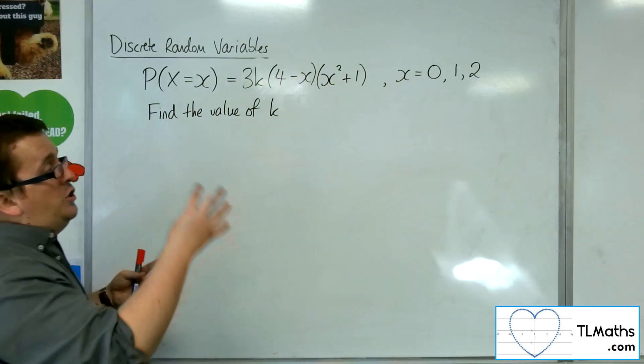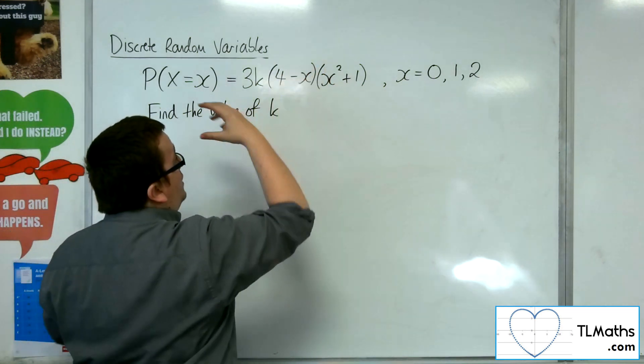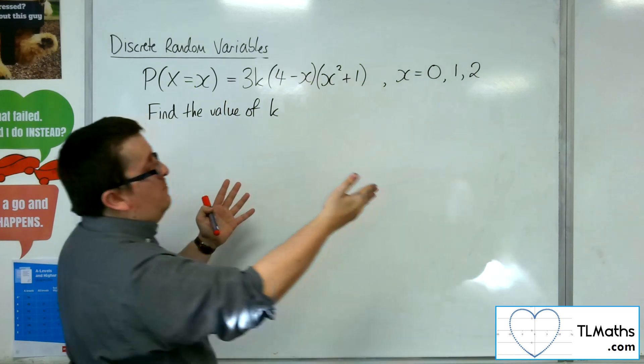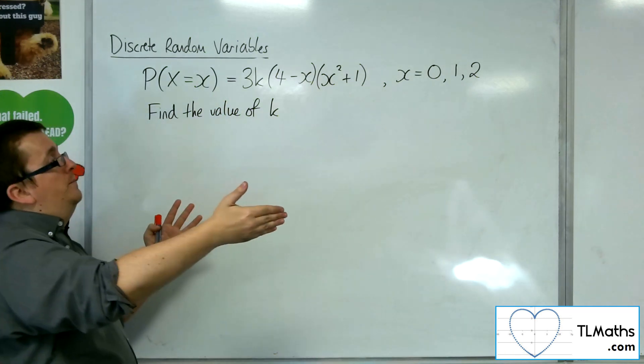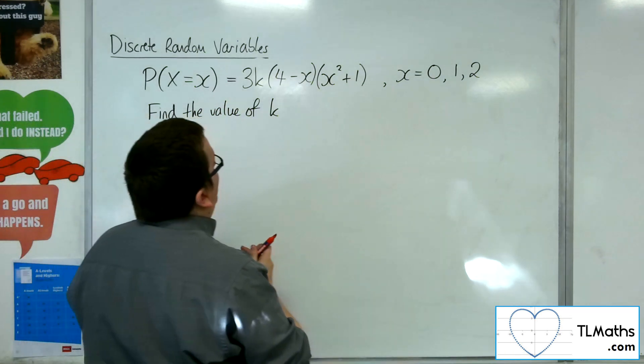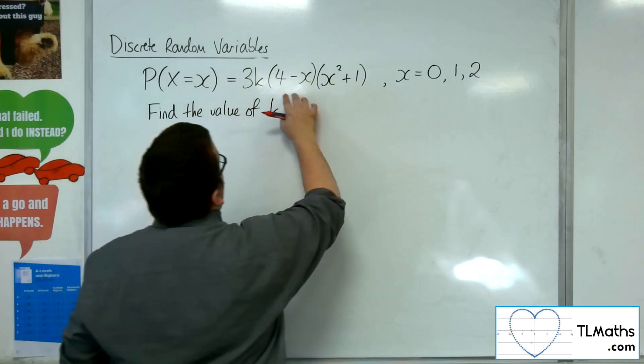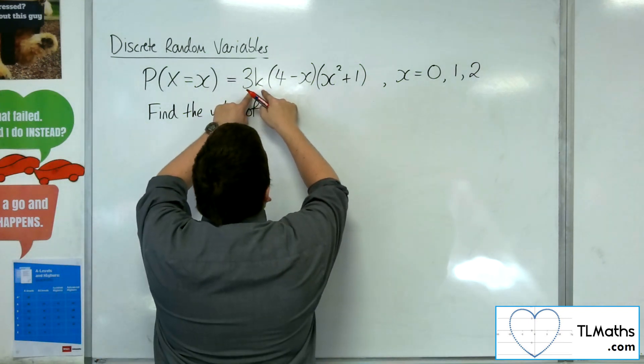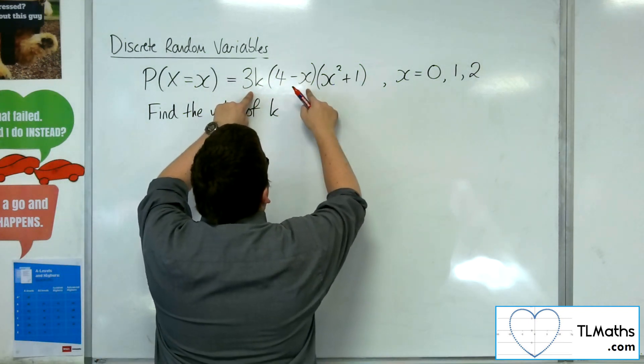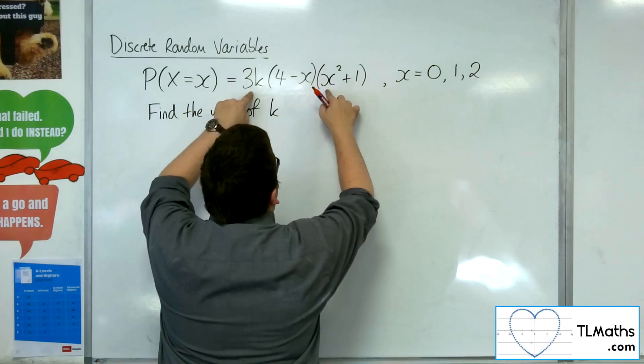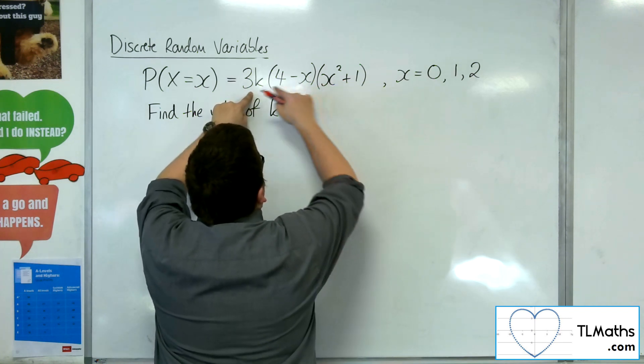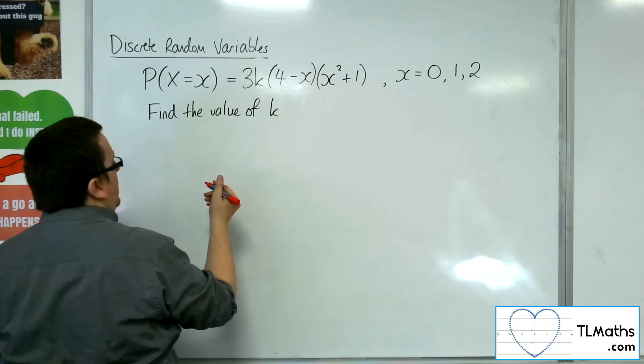What I want to do is substitute the values of x into that, and I know that each of those three probabilities that I get must add up to 1. So when I substitute in 0, I'm going to get 3k times 4 take away 0, so 4, times by 0 plus 1. So 3k times 4 times 1, so 12k.